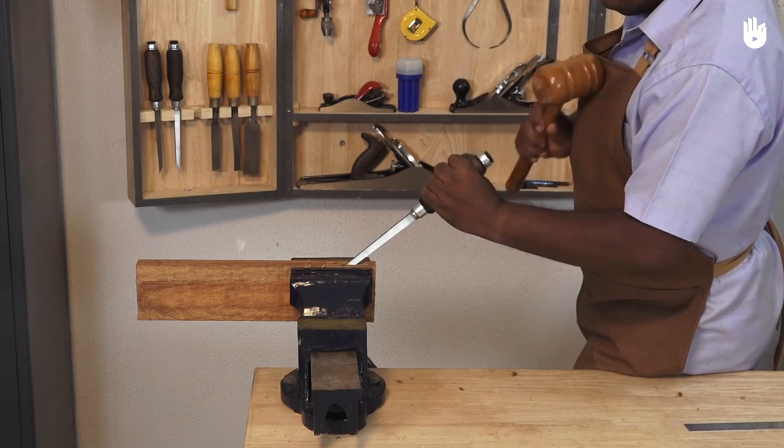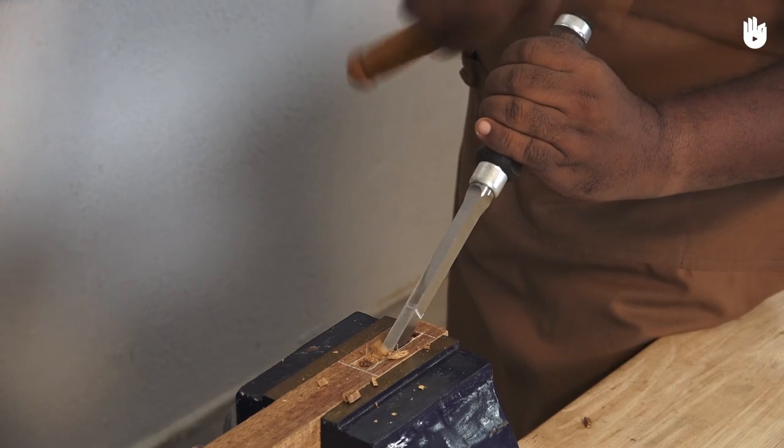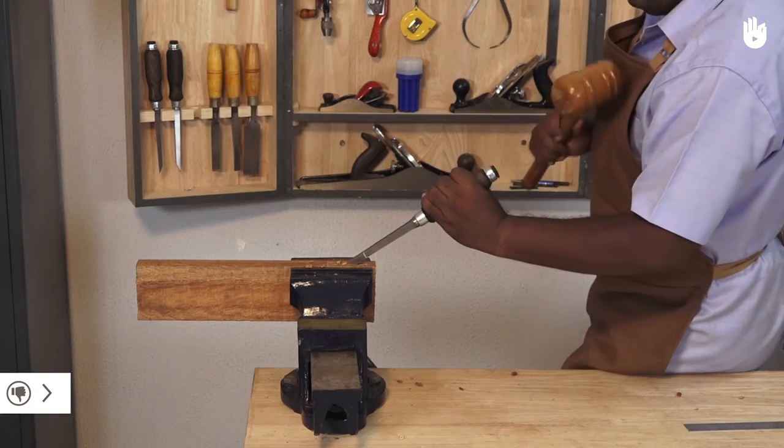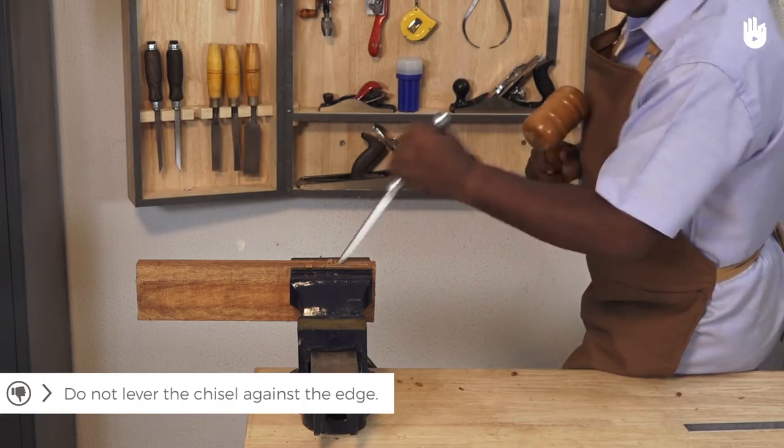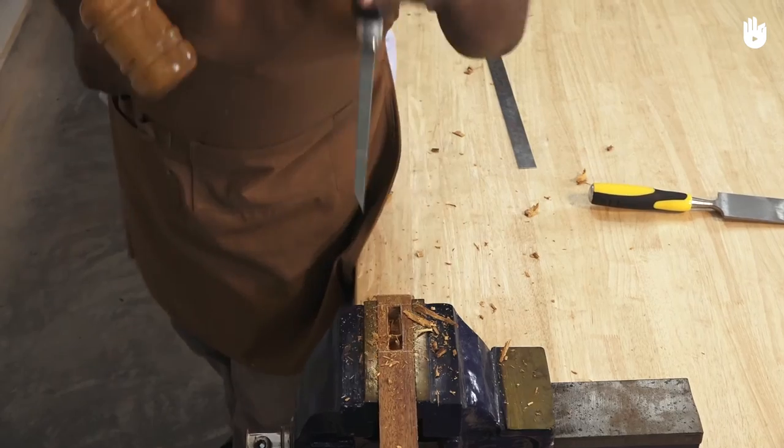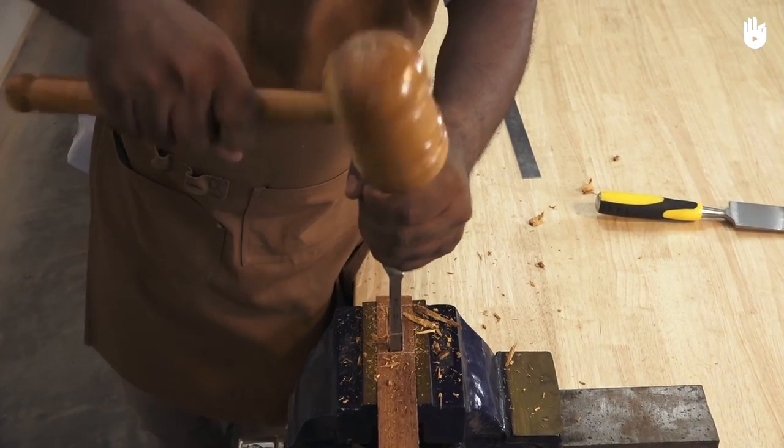Strike the chisel with a mallet, creating a series of notches from end to end. Do not lever the chisel against the edge. Now, gently chisel out the layer of notches.